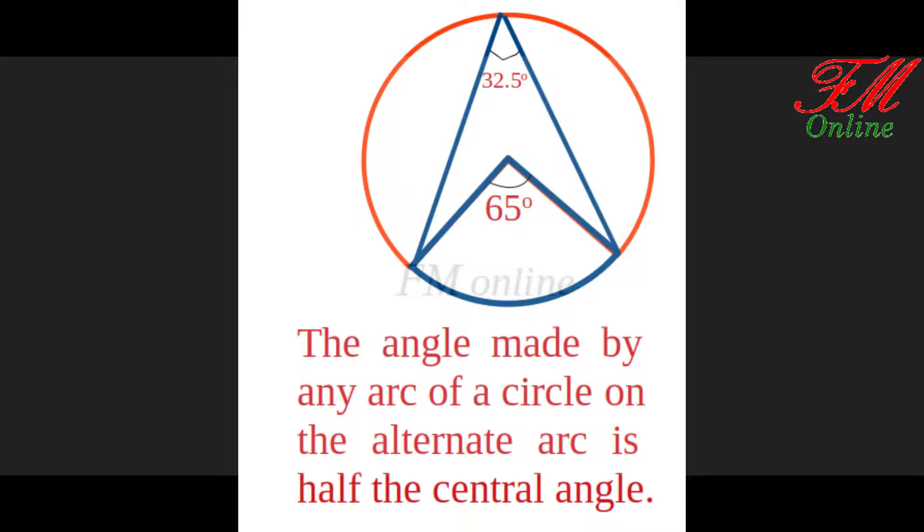So we use the concept that the angle made by an arc of a circle on the alternate arc is half the central angle. Now we can move to the construction.